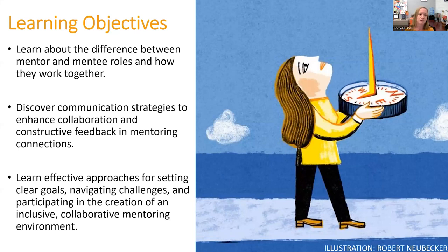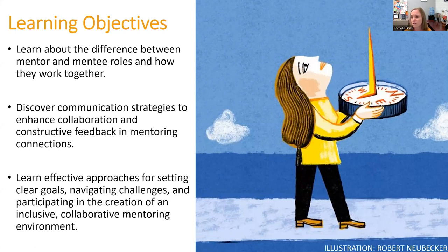Today we're going to learn about the difference between mentor and mentee roles and how they work together. We'll discover communication strategies that are very effective — a lot of which starts with knowing yourself better: knowing your expectations, your boundaries, your goals, and seeing your reality, which can be incredibly hard. We'll work on learning effective approaches and go through some tools and exercises that you can use afterward to get a clearer picture.